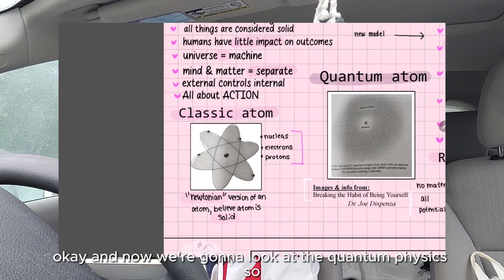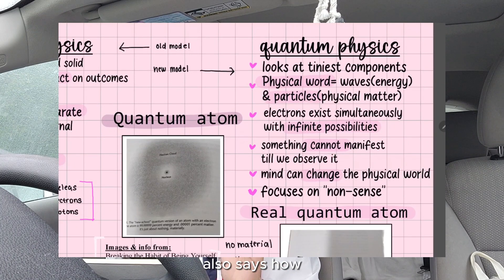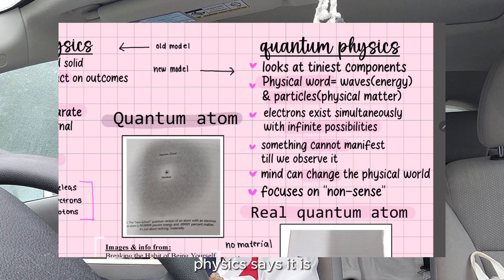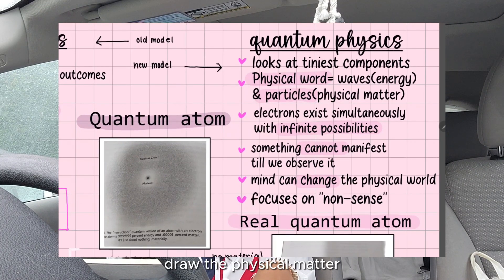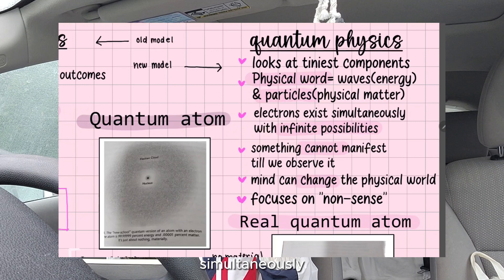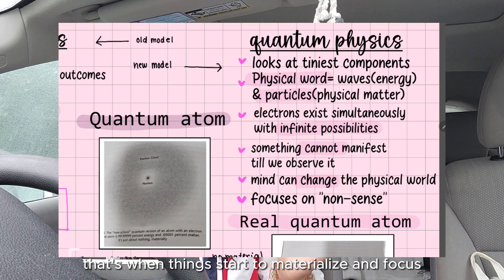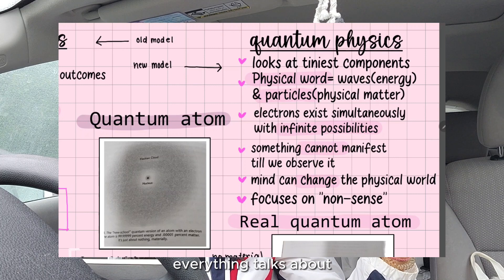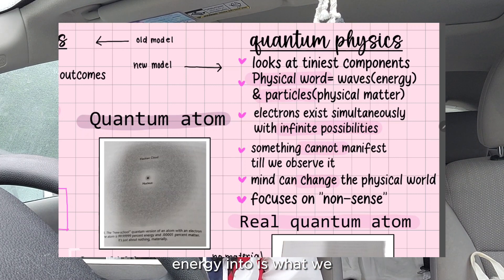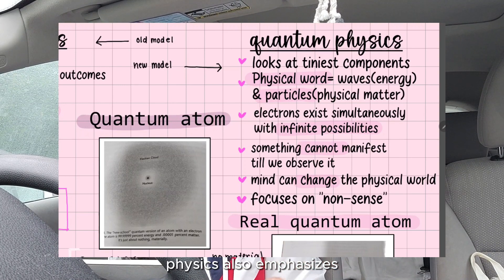Now let's look at quantum physics. Quantum physics looks at the tiniest components of an atom. It says how the physical world is not very solid as Newtonian physics claims — it's more waves, energy, and particles which are the physical matter. Quantum physics also says how all electrons exist simultaneously with infinite possibilities. Once we direct our observations, our focus and attention to something, that's when things start to materialize — which is what the law of assumption talks about. What we put more energy into is what we see more, attract more, and what materializes more.